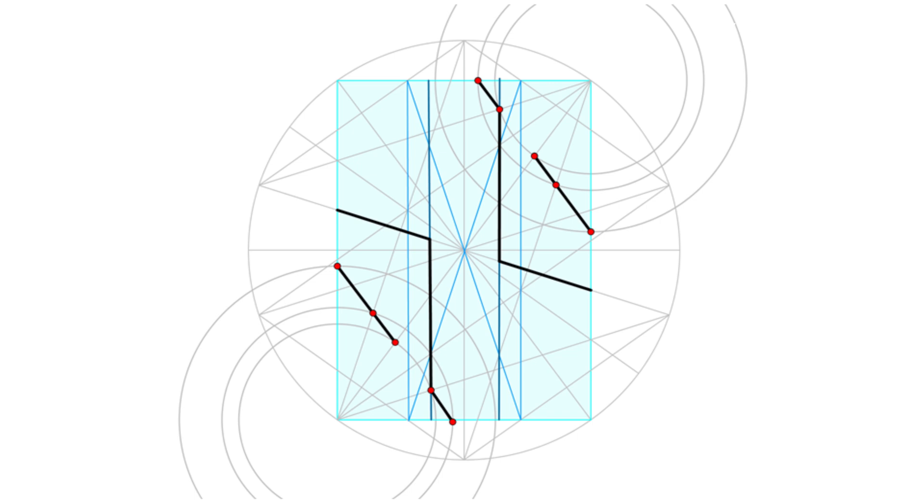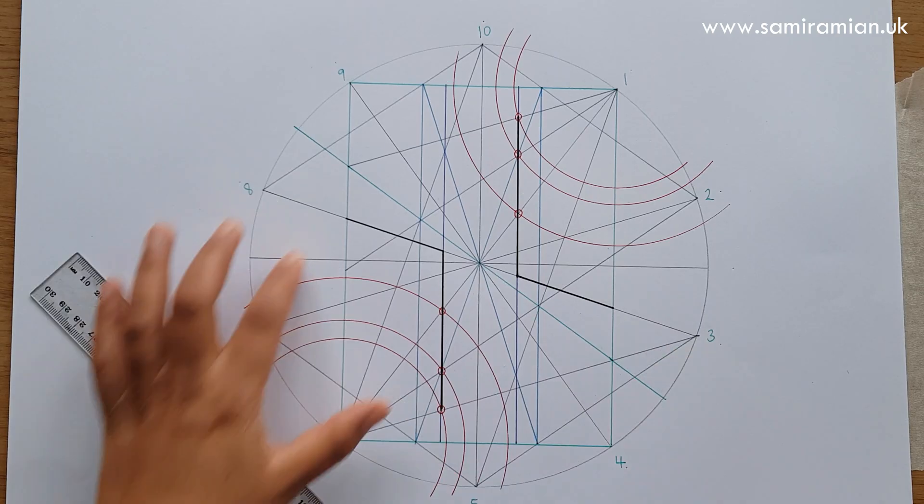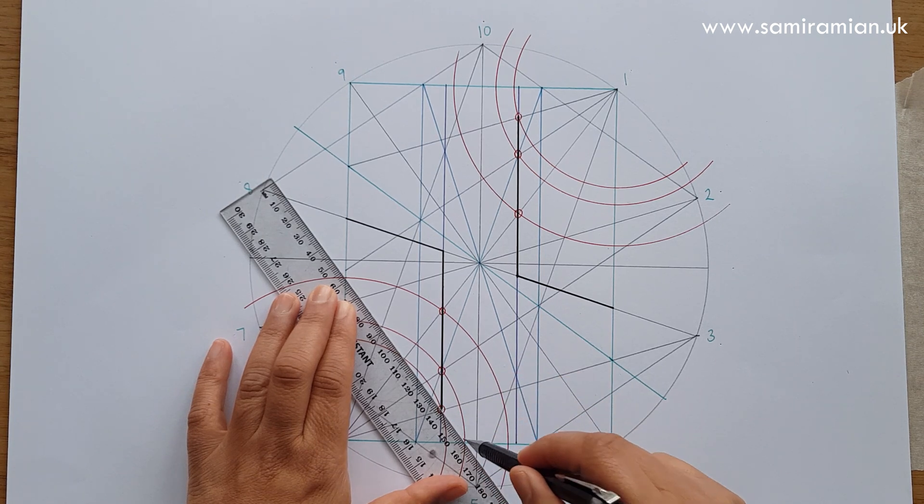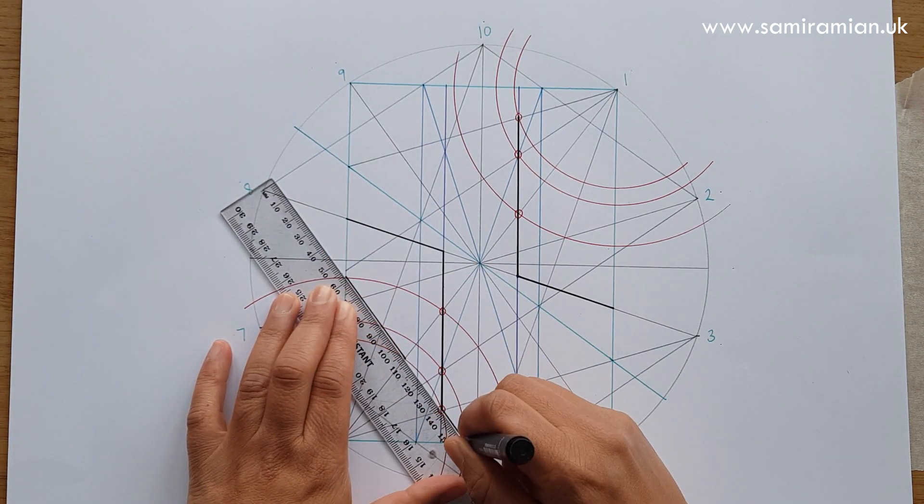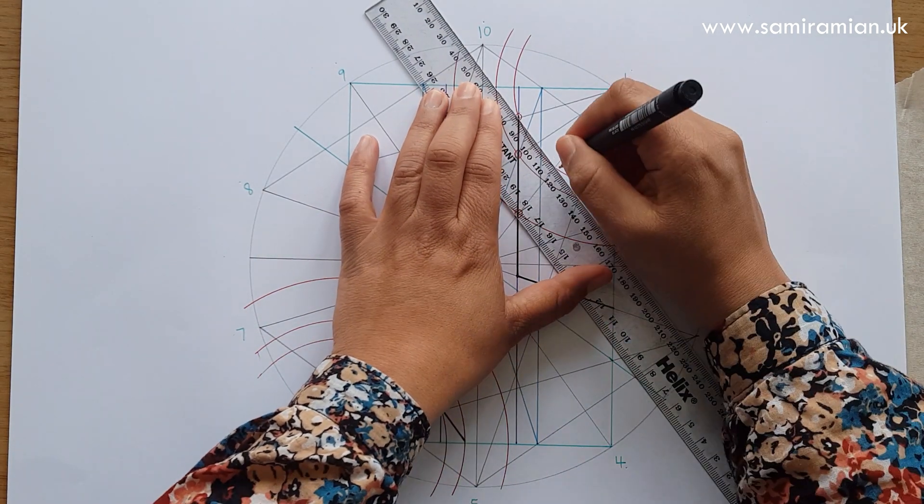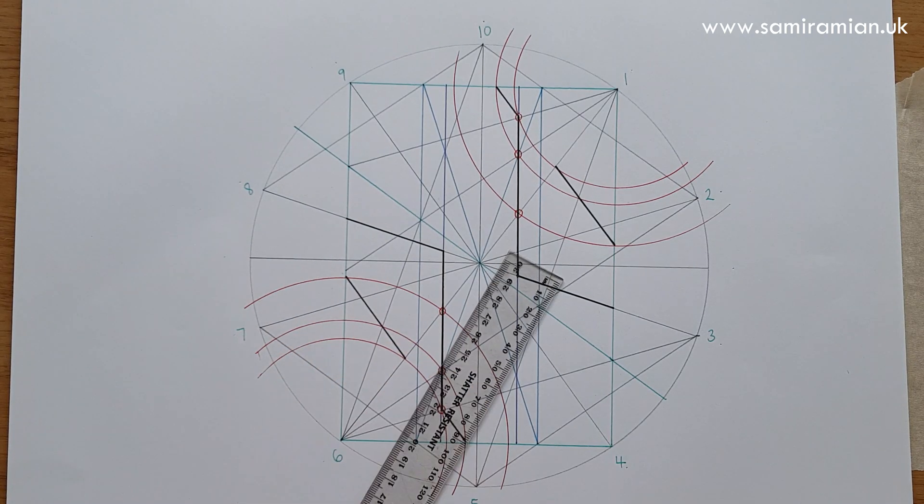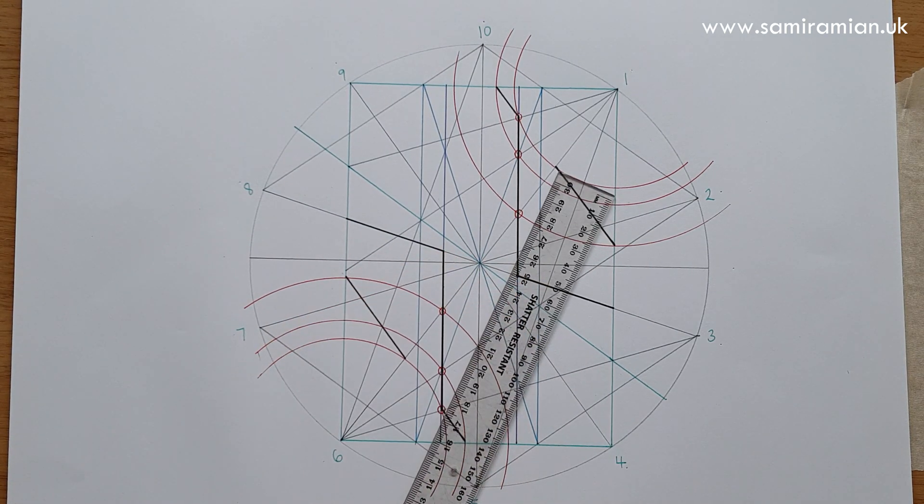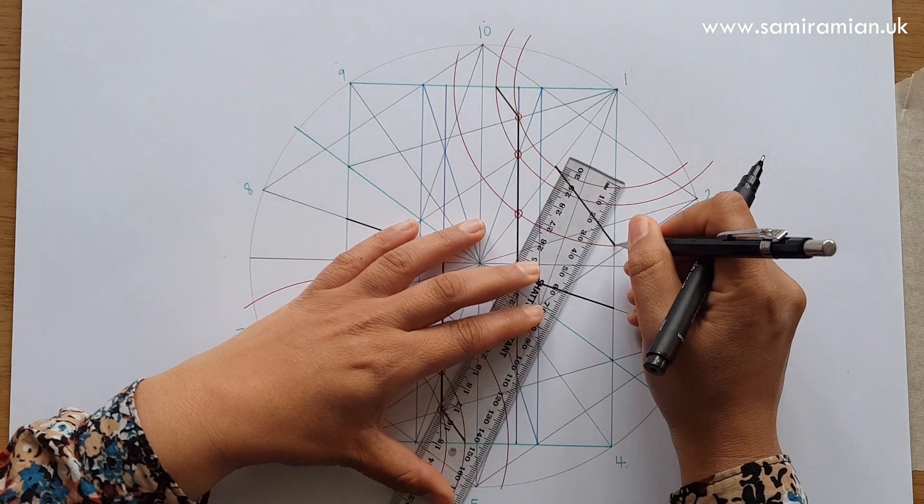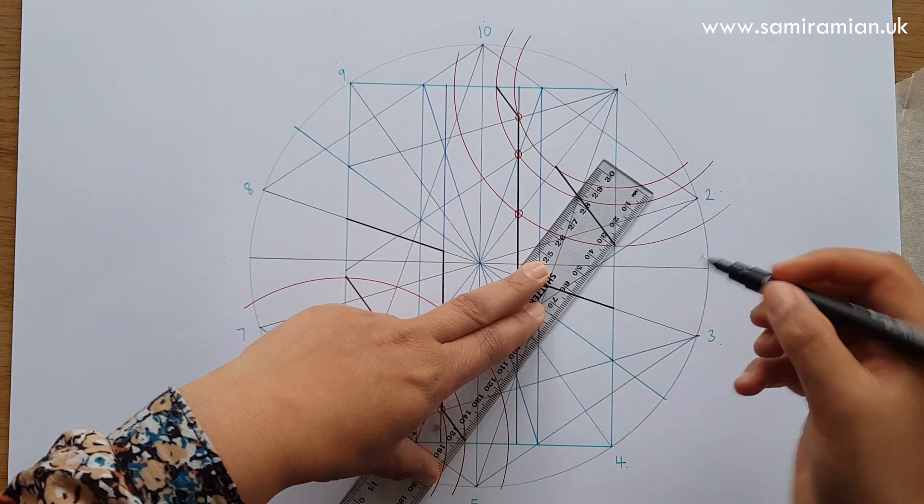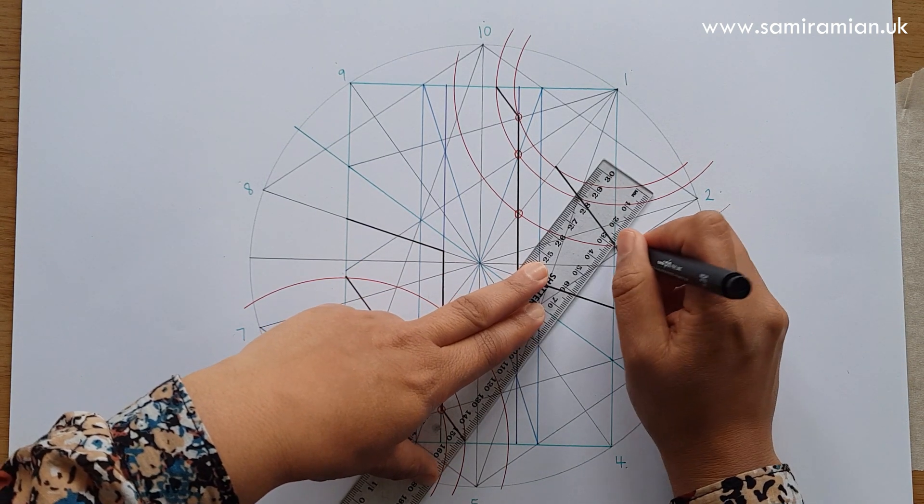We're going to use the circles now to start bringing together the shamsa: outer, middle, inner, and then inner middle. Try and get the best fit for all of them. The order in which you do the lines doesn't have to be necessarily the exact same thing.